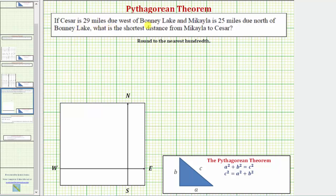If Caesar is 29 miles due west of Bonnie Lake, and Michaela is 25 miles due north of Bonnie Lake, what is the shortest distance from Michaela to Caesar?